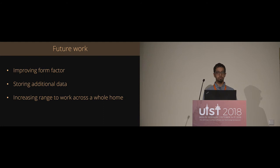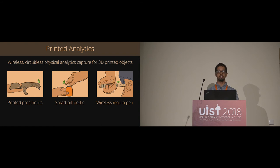So just a few ways that we can improve on this in the future. The first thing is to improve the form factor of these objects and make them smaller and better integrated with our designs. We can also look at ways to store additional data, such as individual data points rather than just accumulating information and maybe storing the time that these were recorded. And of course, we'd always like to improve our wireless range to hopefully get this to work across a whole home. So in conclusion, I've shown you how printed objects can communicate and store information about how they're used. And this enables analytics for things like printed prosthetics, pill bottles, and wireless insulin pens. Thank you.